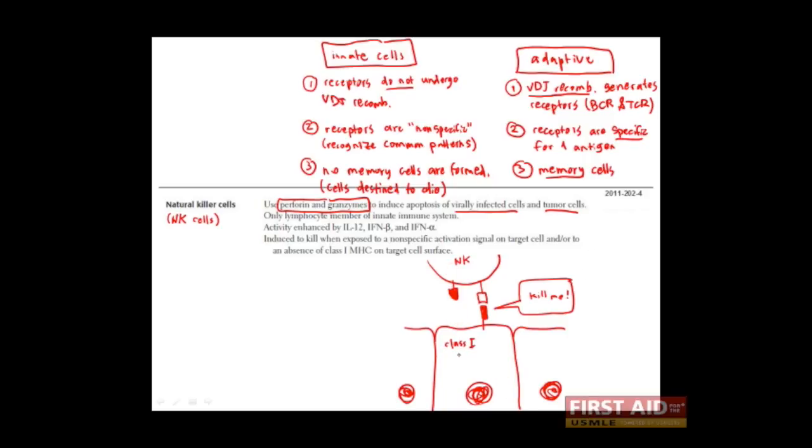This inhibitory signal can be lost when a cell is infected with a virus. And many viruses have actually evolved ways to remove class 1 molecules from the surface of the cells that they infect. This decreases the likelihood that they'll be presented to cells of the adaptive immune system. However, the NK cell is no longer receiving its inhibitory signal. So now the NK cell only sees the kill me signal and can induce the death of the epithelial cell and prevent the transmission of virus.